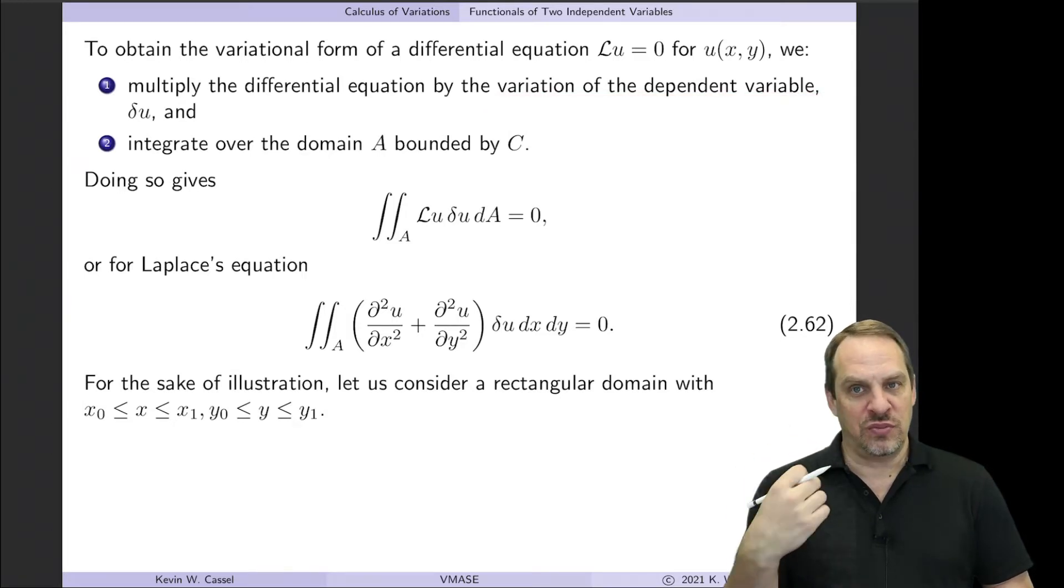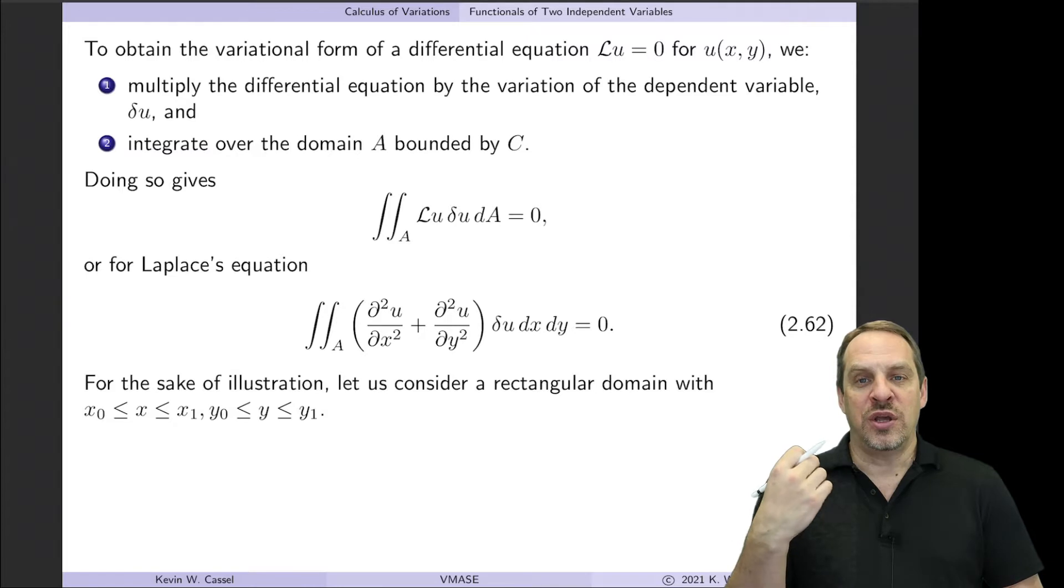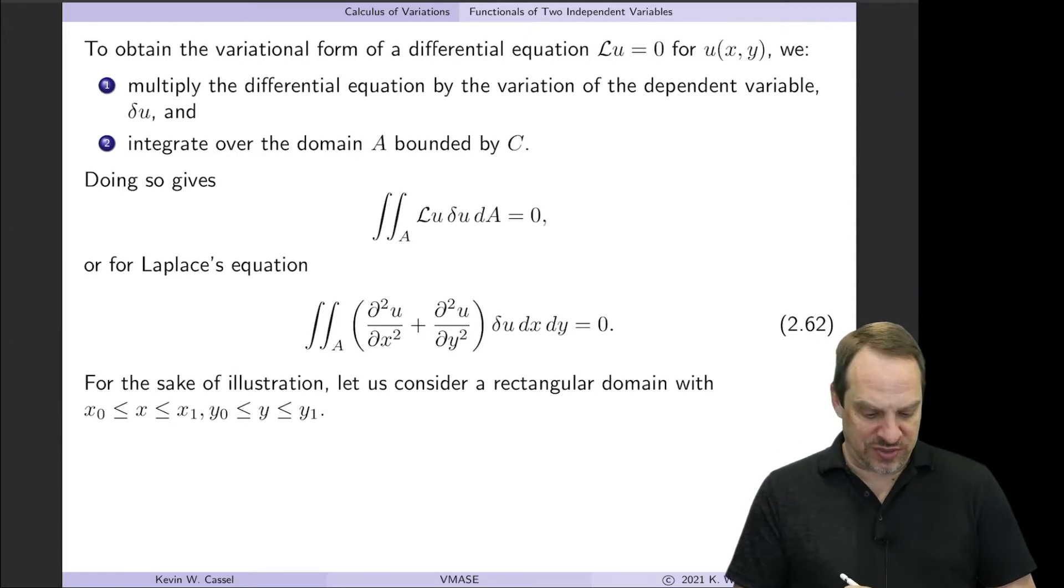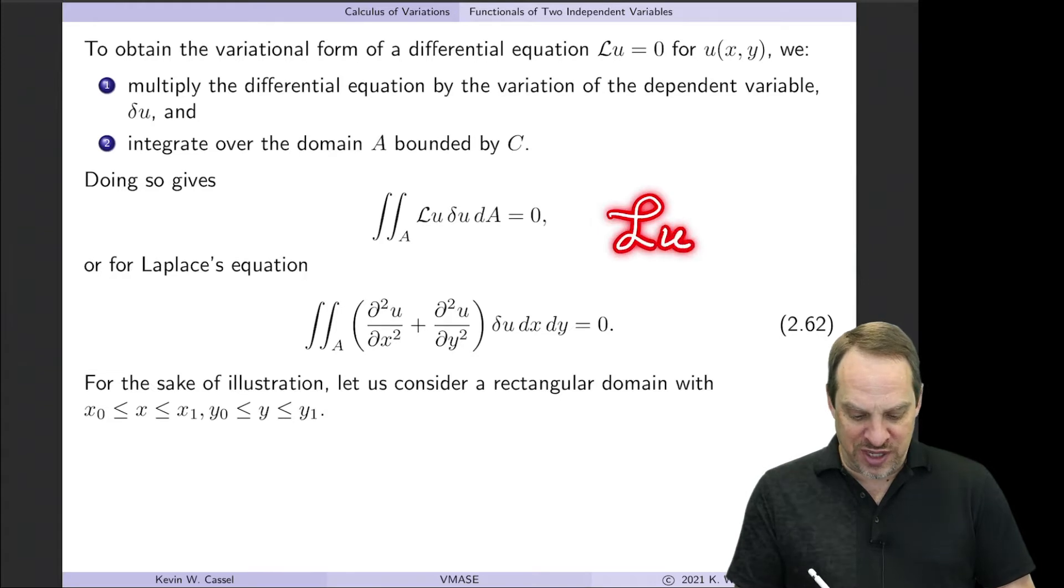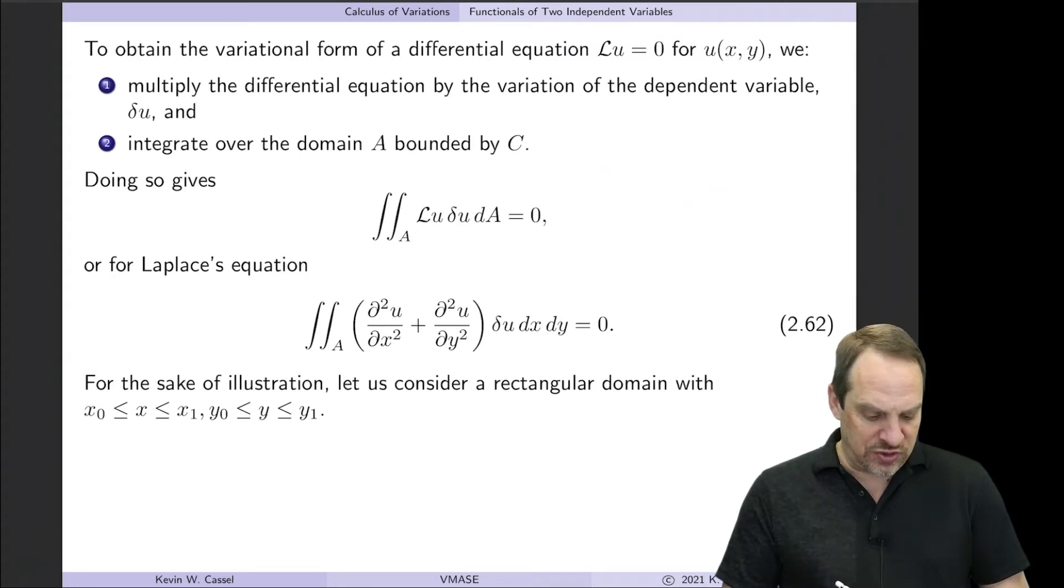Then the second step is to integrate over the entire domain, A, which is bounded by C. So we started out with LU is equal to zero. We multiply by the variation, and then we integrate over the domain.